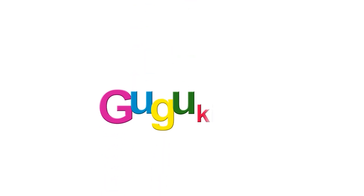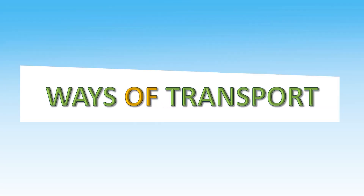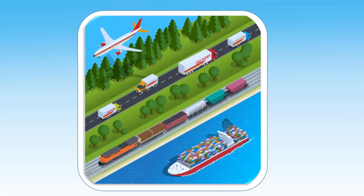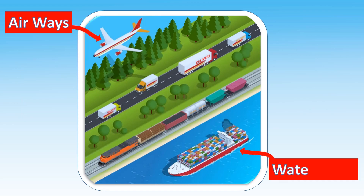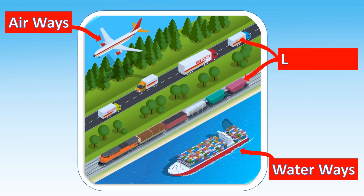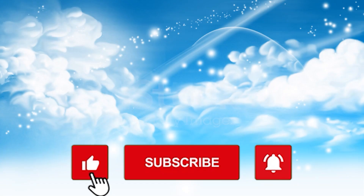Hello kids, welcome to this case study on ways of transport. There are three ways of transport: airways, waterways, and landways. In landways, there are two ways of transport: roadways and railways. Let's see the names of transport.